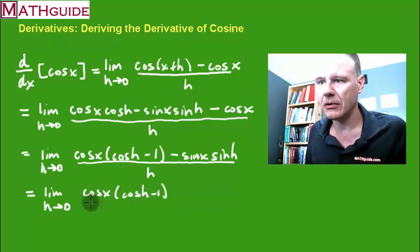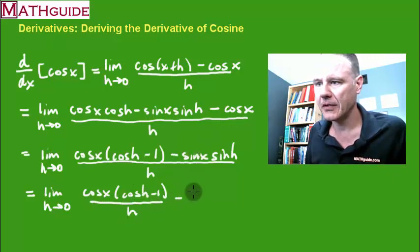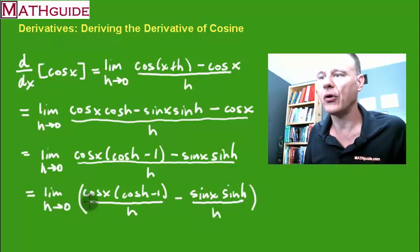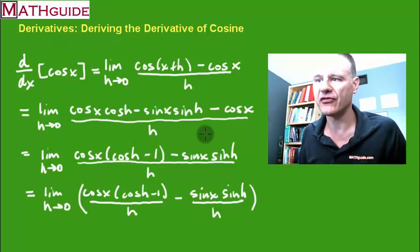So I've just separated this fraction into two separate fractions. How do you combine two fractions? Well, if they have a common denominator, you combine the numerators and there you go. I'm right back to my original. Most people don't see it in that direction.